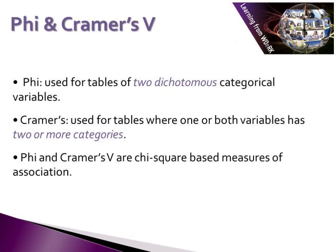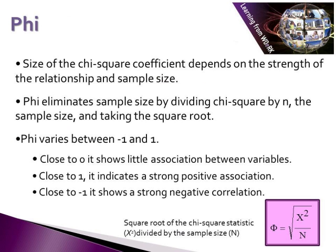Phi and Cramér's V are chi-squared based measures of association. With Phi, the size of the chi-squared coefficient depends on the strength of the relationship and the sample size. Phi eliminates sample size by dividing chi-squared by n, the sample size, and taking the square root.